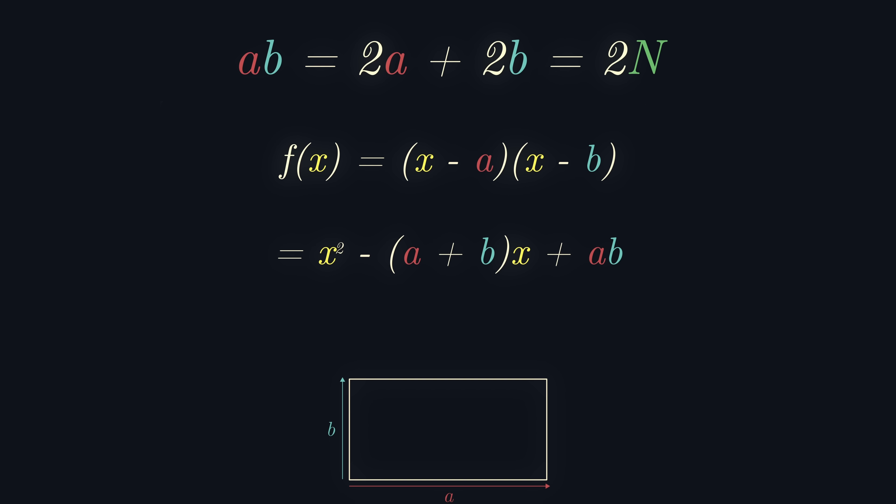But we know that minus (a plus b) equals minus n, as we defined n, and ab equals 2n. So, our polynomial f of x equals x squared minus nx plus 2n.